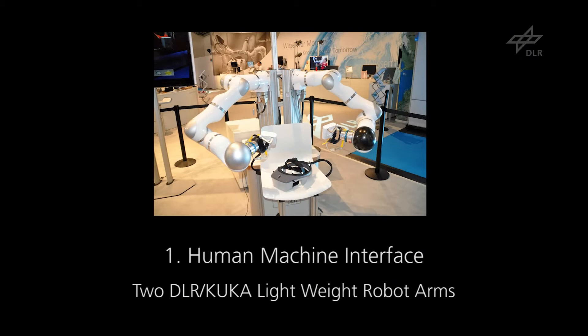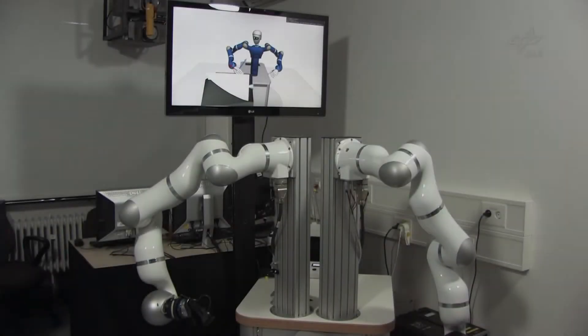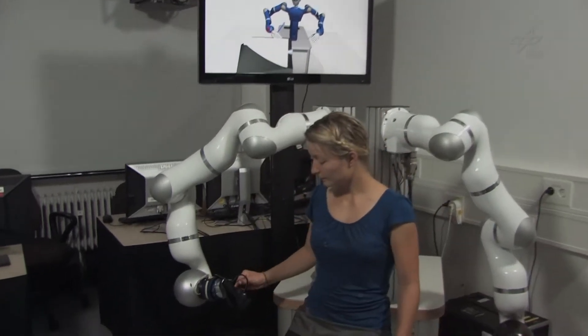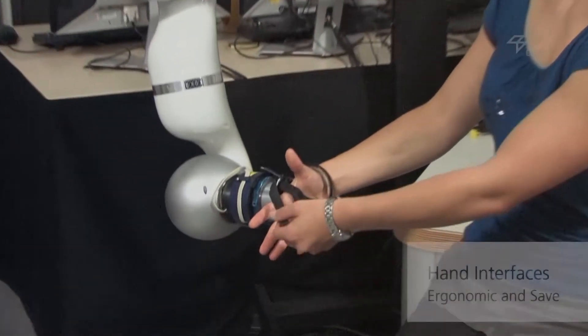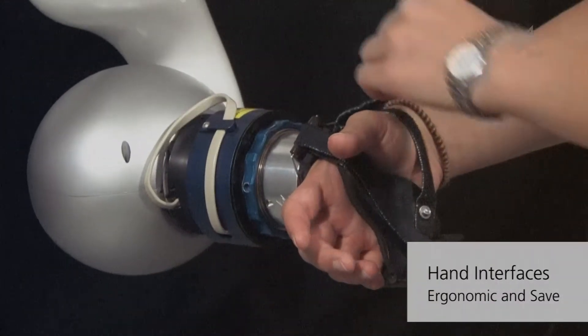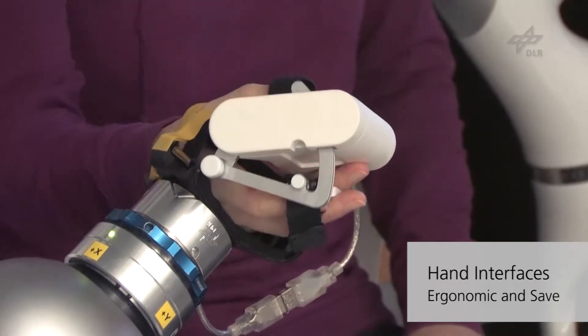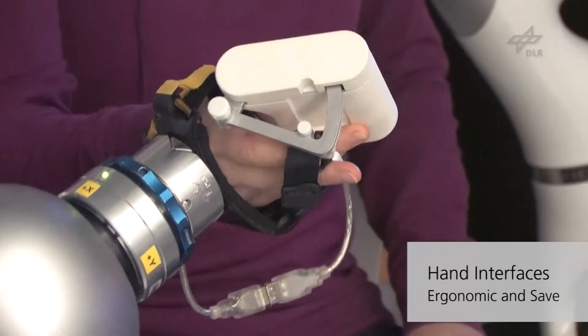Our bimanual haptic device is composed of two lightweight robot arms. Torque and position sensors are integrated into each joint enabling both impedance and admittance control. We can operate with a bare hand coupled to the end-effector or with several hand interfaces such as the one degree of freedom force feedback interface shown here.